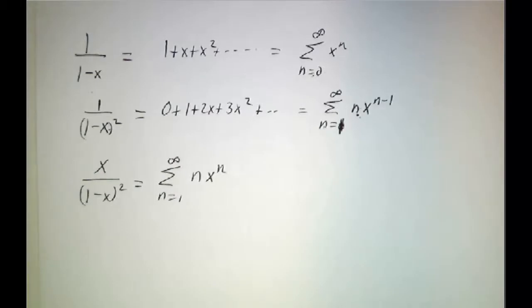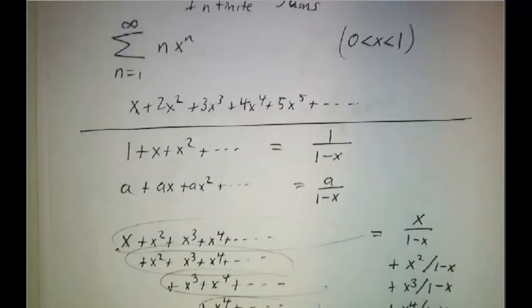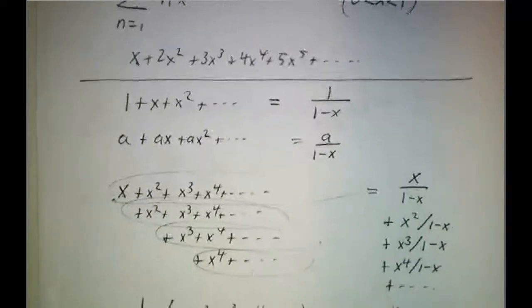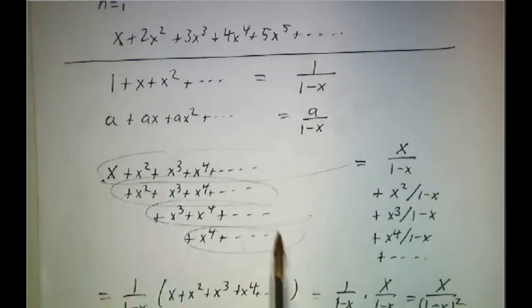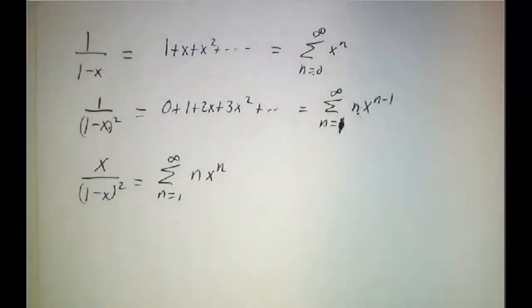So it's the same result that we got by writing our sum out in a clever triangular form. So you could do it by doing sums or you can use it by taking derivatives. Those are both the kinds of tricks that come up a lot in probability.